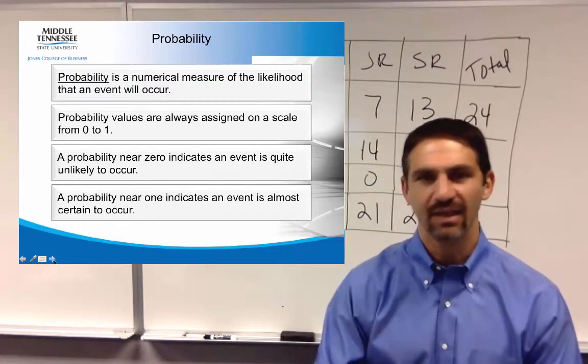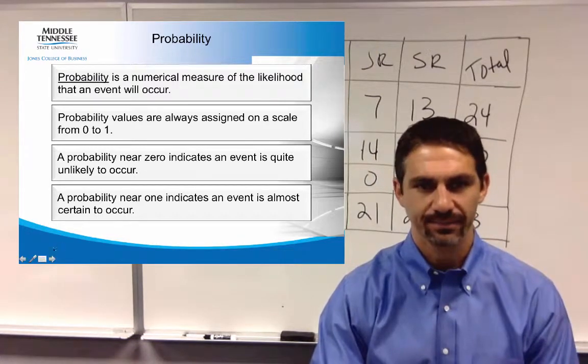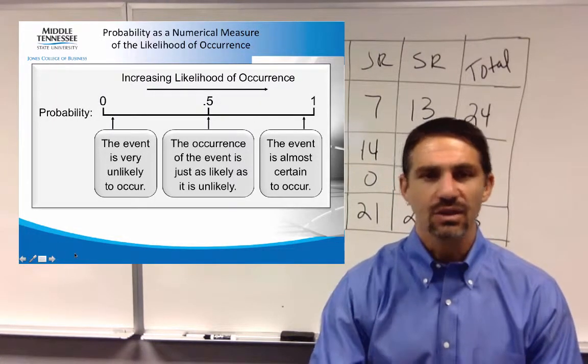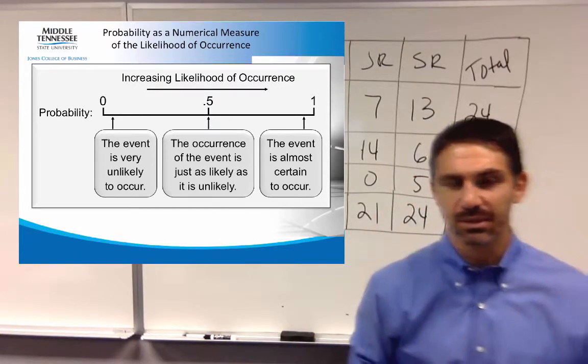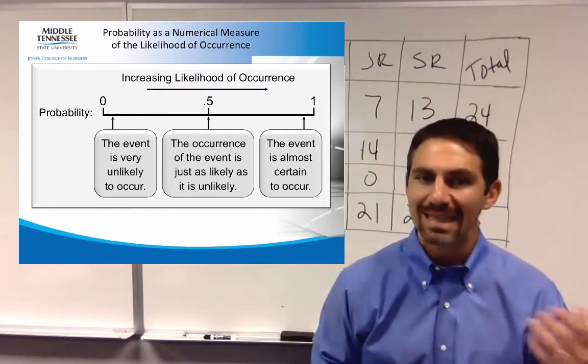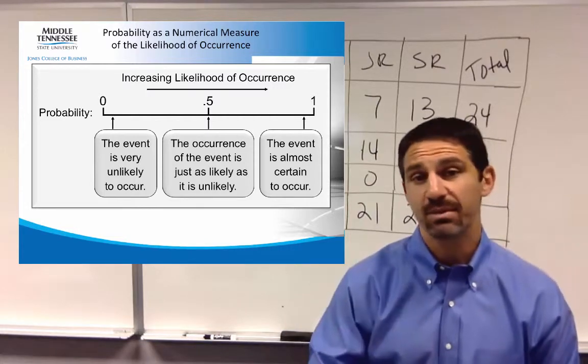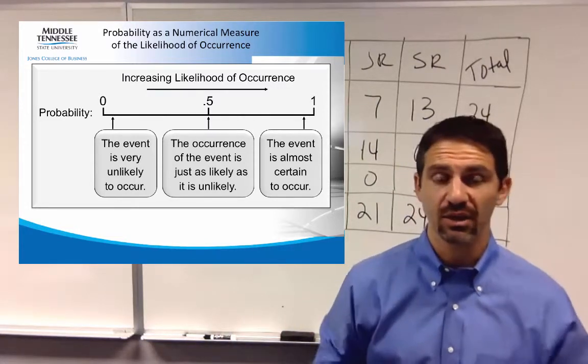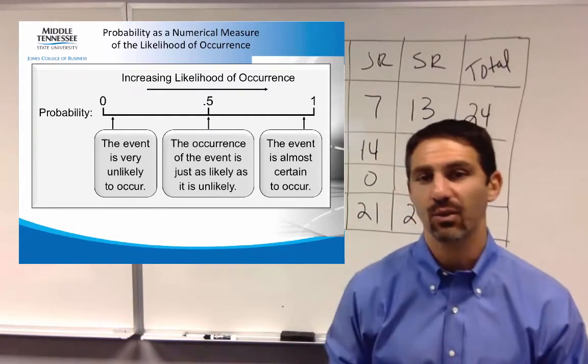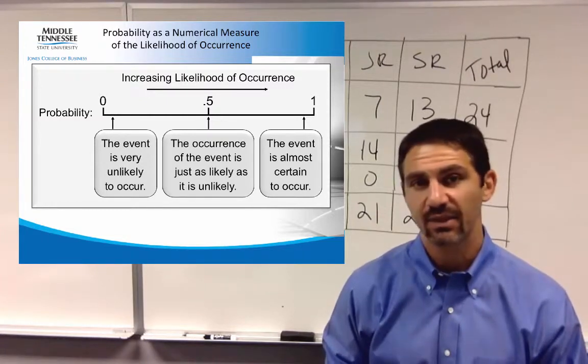Again, the likelihood of something occurring. At the 0% or probability, it's not very likely. 50% is a could or could not happen, and 100% or one being definitely likely to occur.